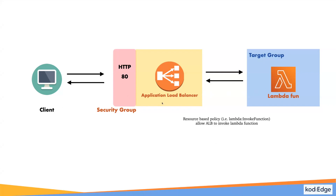While creating the application load balancer, we will create a target group, and in the target group we will attach the Lambda function. The application load balancer requires permissions to invoke the Lambda function — for that it uses a resource-based policy. We will see that in the hands-on. So let's get started.